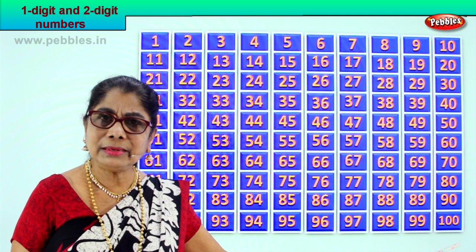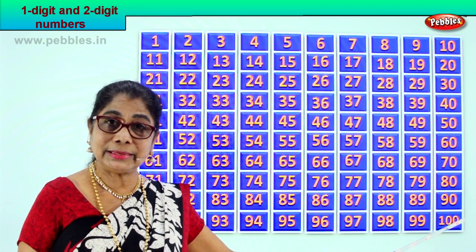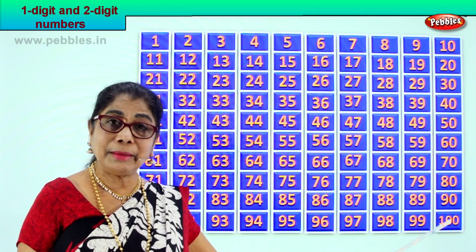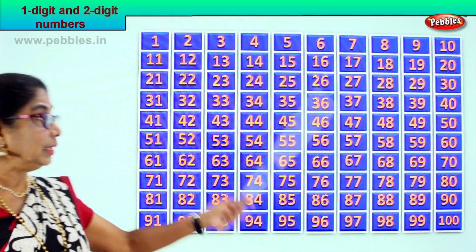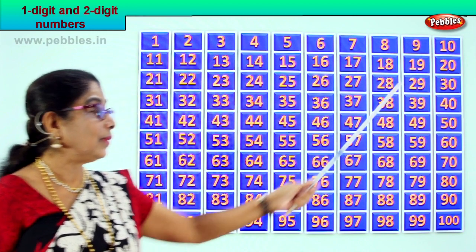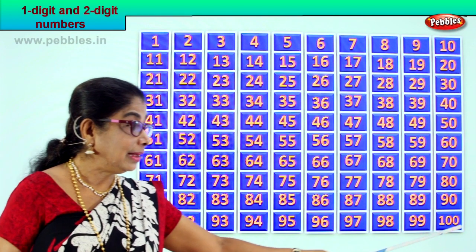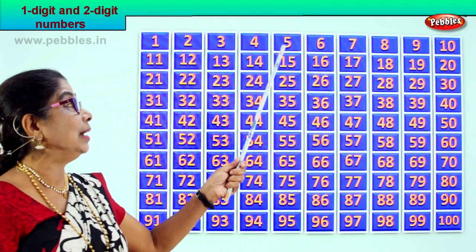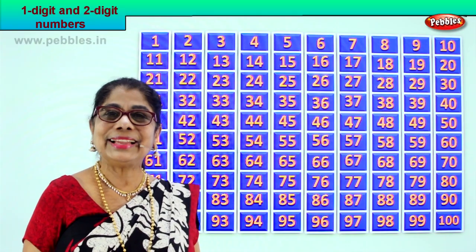Now let's look at the last number. You have 0 in the ones place, 0 in the tens place, and 1 here — the last number has 3 digits. So we say it is 100. All the first set of 9 numbers are one-digit numbers. The rest up to 99 are all two-digit numbers. And the last number, 100, is a three-digit number. So now you know what is a one-digit number, a two-digit number, and a three-digit number.